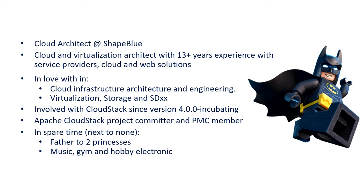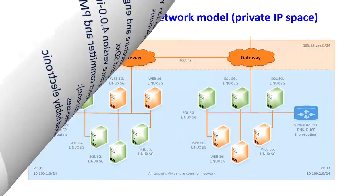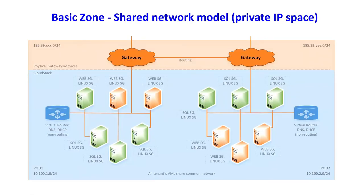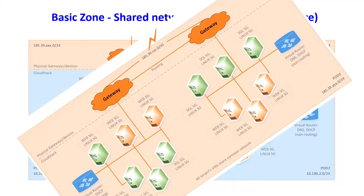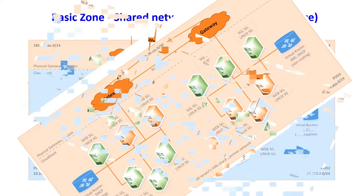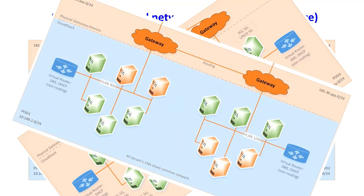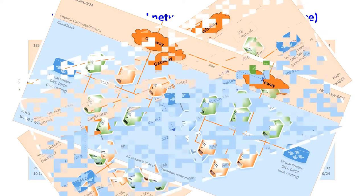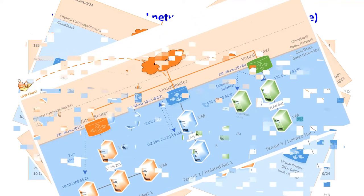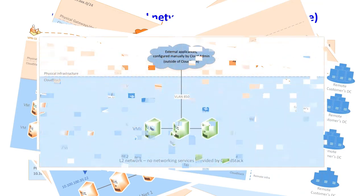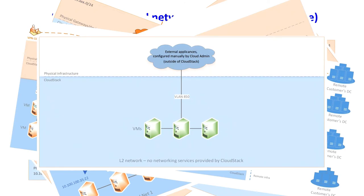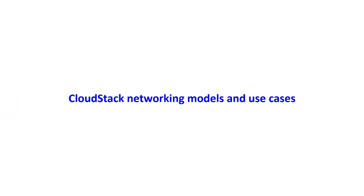We are going to explain differences between: a shared basic zone with a public IP space; shared networks in advanced zone; isolated networks; VPC isolated networks or VPCs; and finally layer two networks. As you can see, there is a lot to cover.